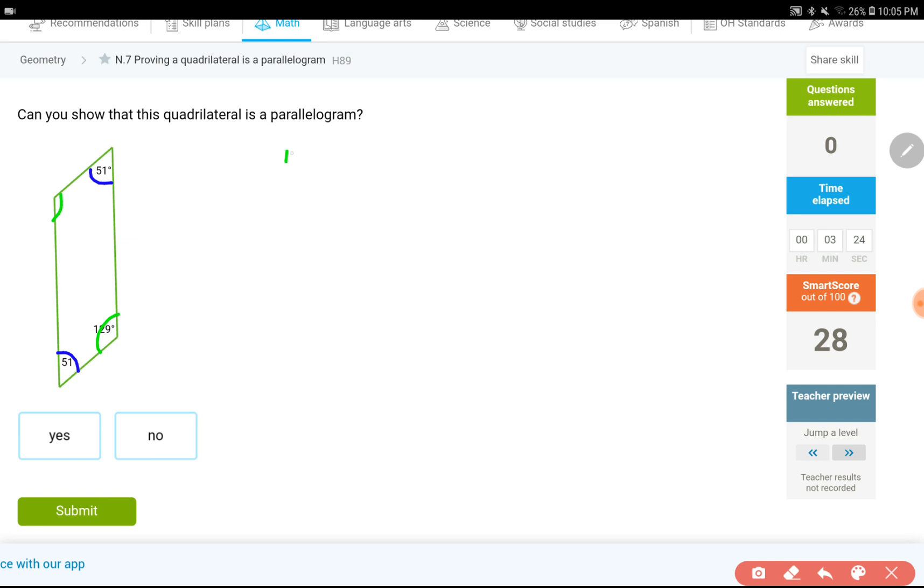All we have to do is figuring out the fourth angle and see if that one is equal to 129. That's what I'm going to do. So, I already have 129, there's 51 degrees, there's another 51 degrees. If I add these three together, 12, 13 and then 231 subtracted from 360 degrees. So that would be 129. So it turned out that the last angle is equal to its opposite angle, opposite pair, which means this is another yes.